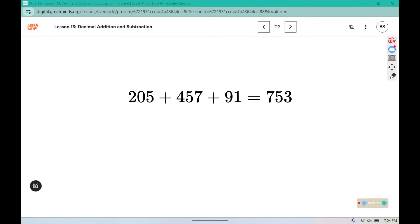Without actually adding, can you determine if 753 is a reasonable answer for this problem? We have 200s, 400s that get us to about 600s, and this is about another 100, so we're in the 700s range. This is a correct sum for this problem, but 753 is not a correct sum for this problem. How could we correct it?